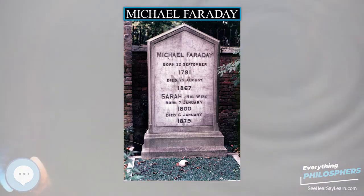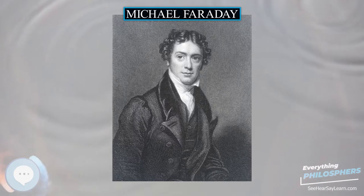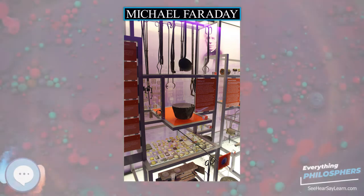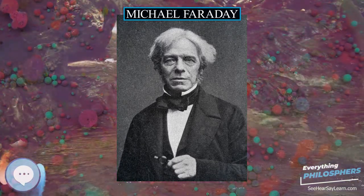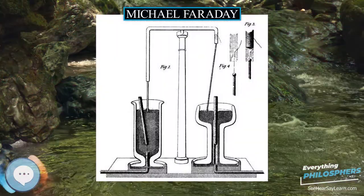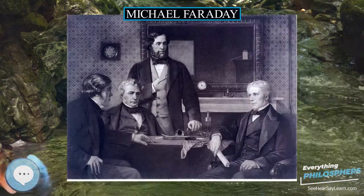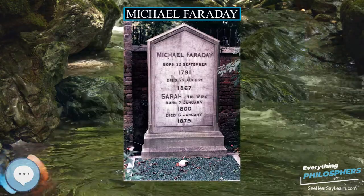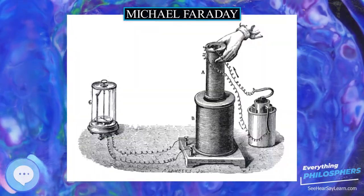It was by his research on the magnetic field around a conductor carrying a direct current that Faraday established the basis for the concept of the electromagnetic field in physics. Faraday also established that magnetism could affect rays of light and that there was an underlying relationship between the two phenomena. His inventions of electromagnetic rotary devices formed the foundation of electric motor technology, and it was largely due to his efforts that electricity became practical for use in technology.